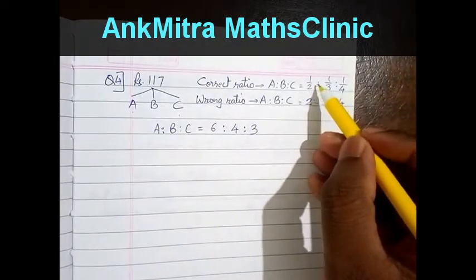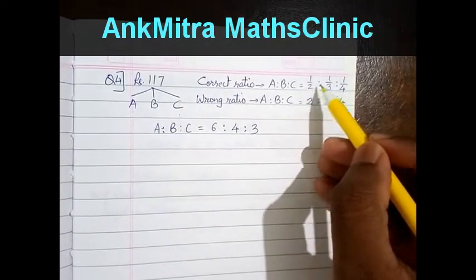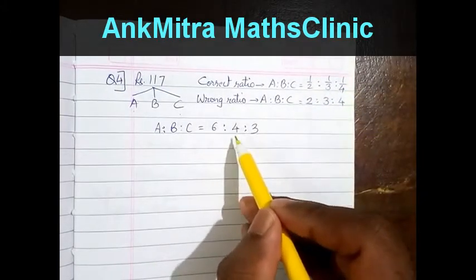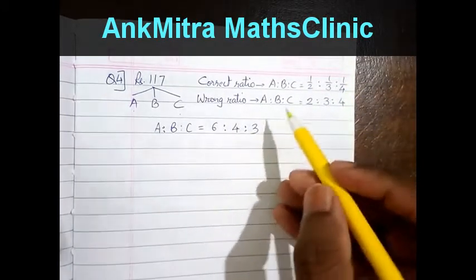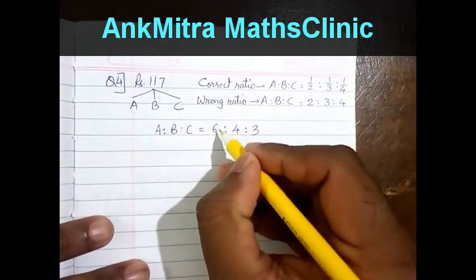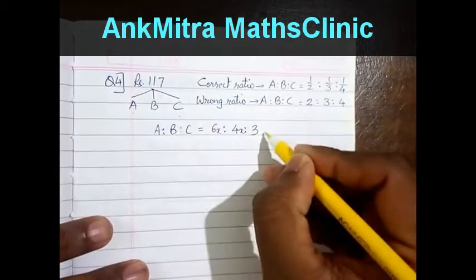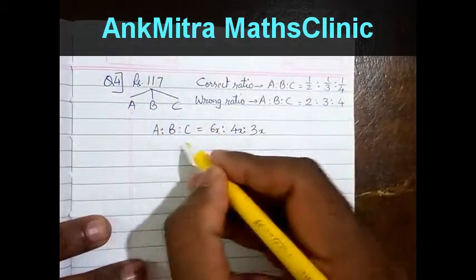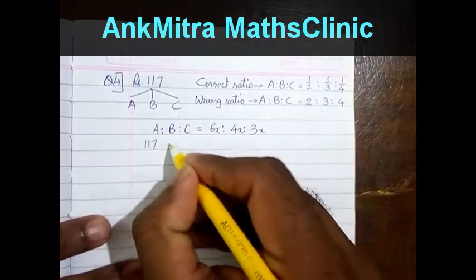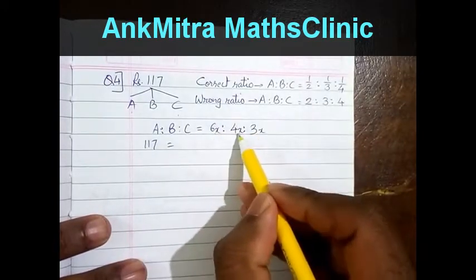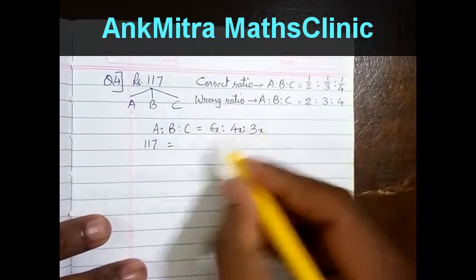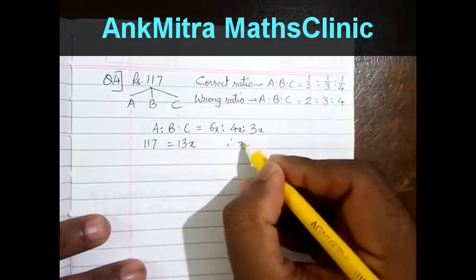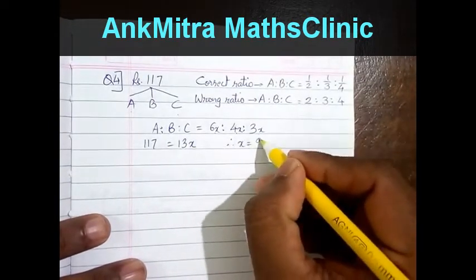So in place of 1/2 : 1/3 : 1/4, we can use 6:4:3. Applying common multiplier x, we get 117 = 6x + 4x + 3x, that is 13x. Therefore x = 9.